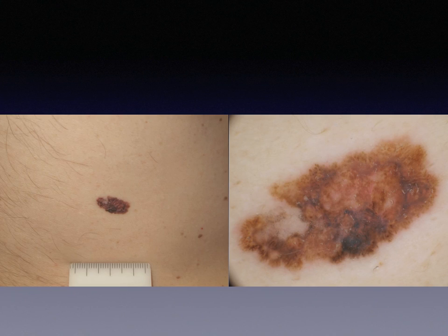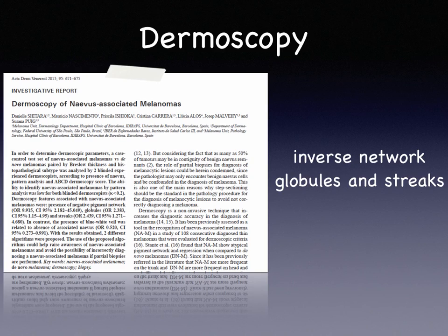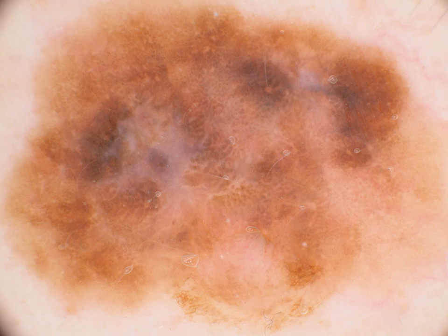In some cases it is more difficult clinically and dermoscopically to distinguish the two components, like in this case. A recent study evaluated the dermoscopy features of nevus-associated melanoma and highlighted that inverse network, globules, and streaks are the more frequent dermoscopic features associated with a nevus-associated melanoma.